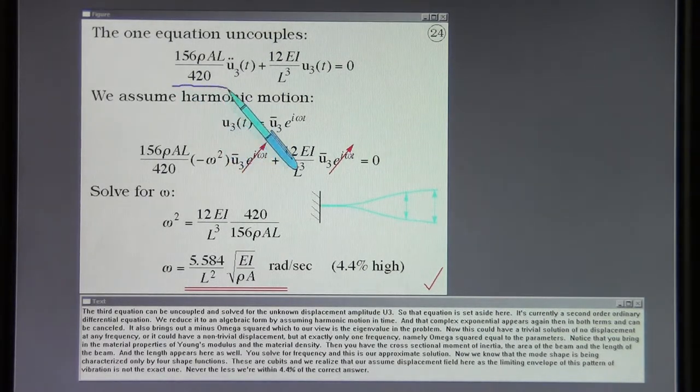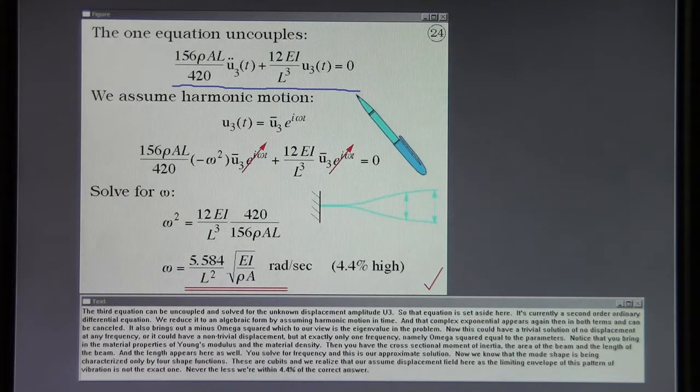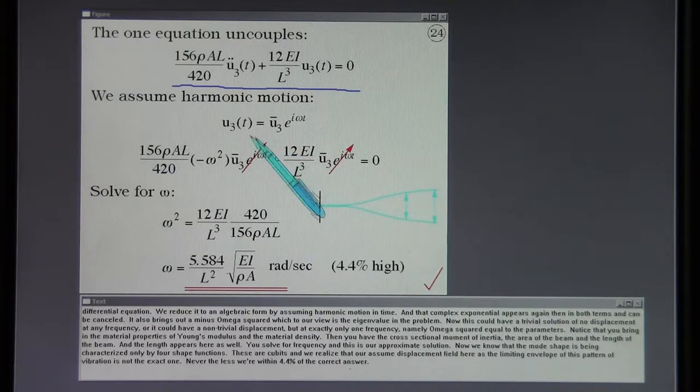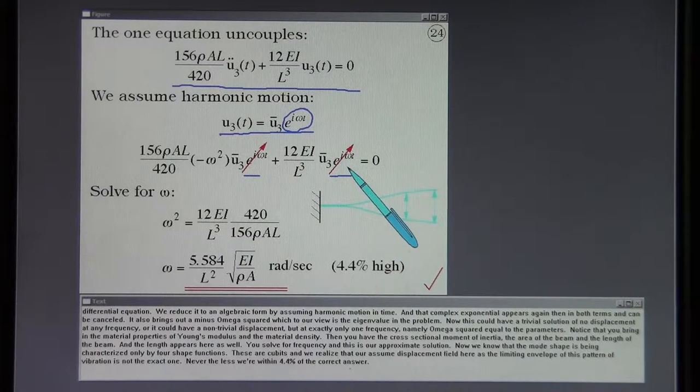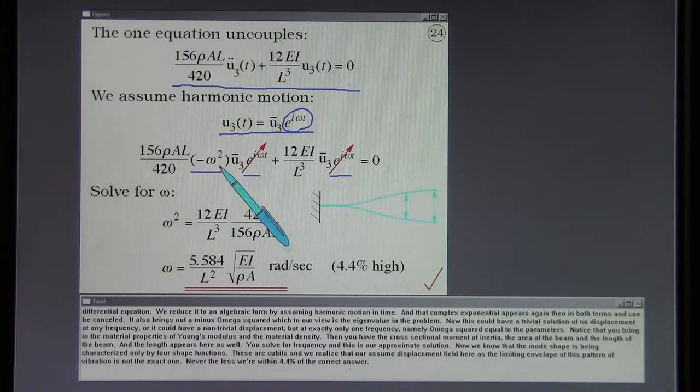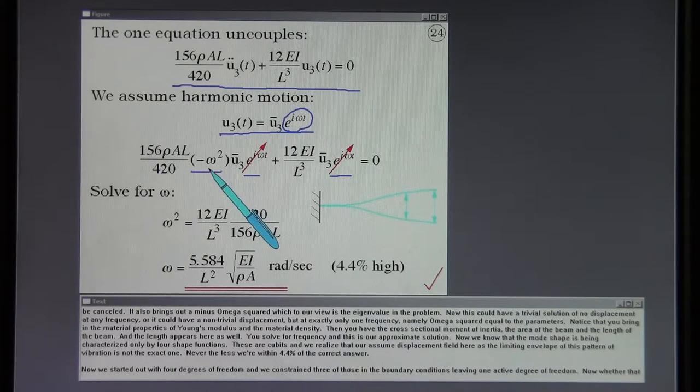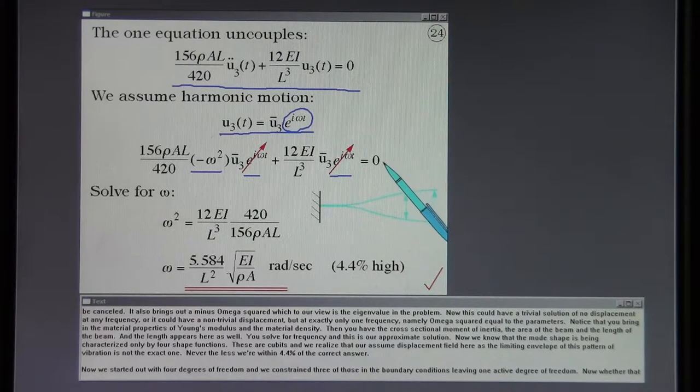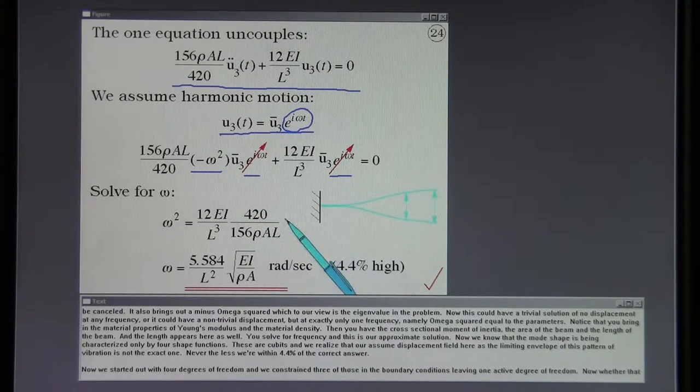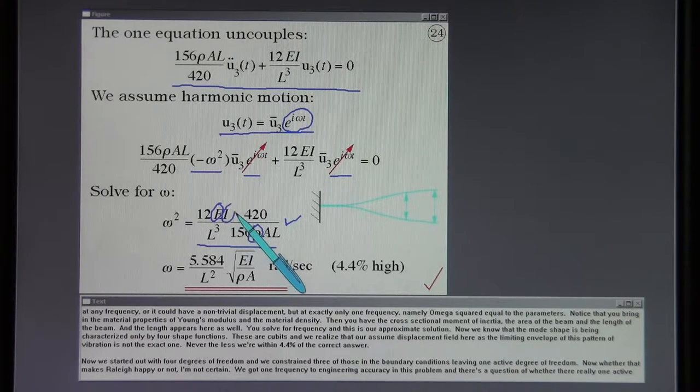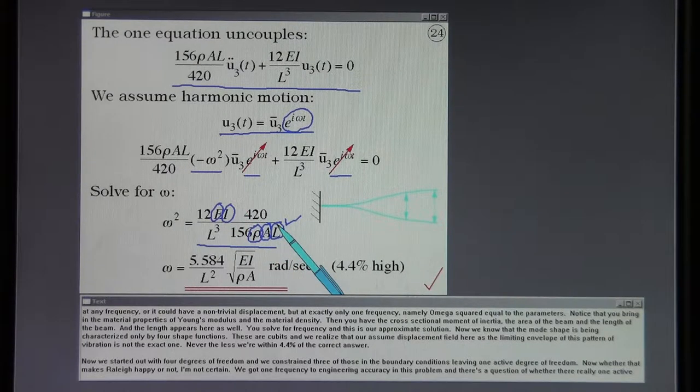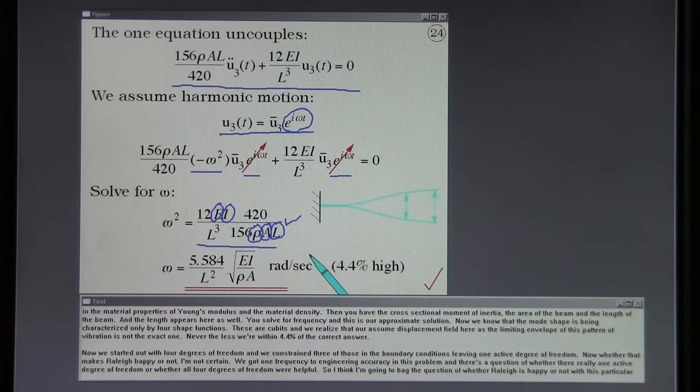The third equation can be uncoupled and solved for the unknown displacement amplitude U3. So that equation is set aside here. It's currently a second order ordinary differential equation. We reduce it to an algebraic form by assuming harmonic motion in time. That complex exponential appears again then in both terms and can be canceled. It also brings out a minus omega squared, which to our view is the eigenvalue in the problem. This could have a trivial solution of no displacement at any frequency or it could have a non-trivial displacement, but at exactly only one frequency, namely omega squared equal to this set of parameters.